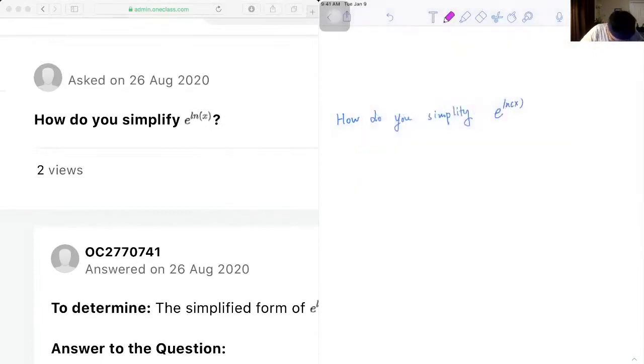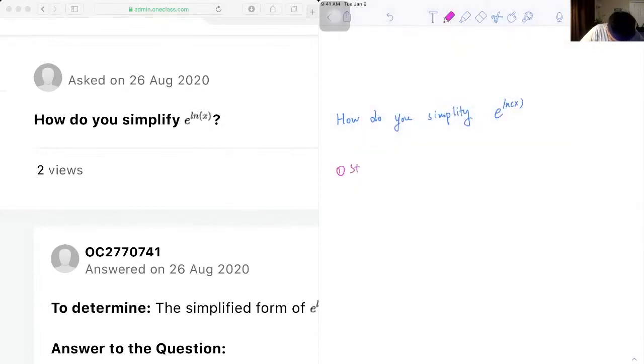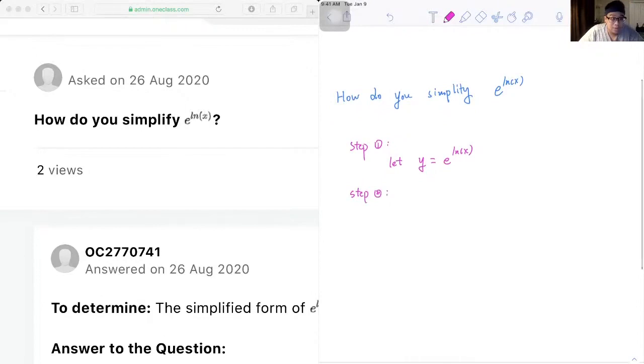So first thing we do, step one, we will let y is equal to e to the exponent of log x. And then our second step, we will take the natural logarithm of both sides of the equation.